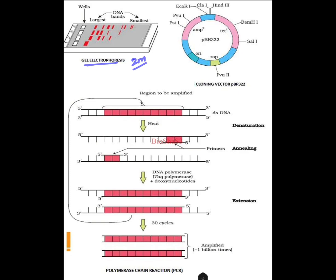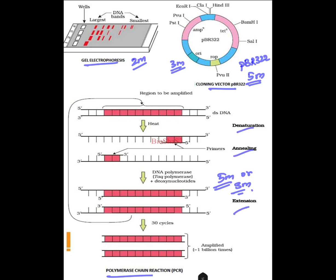The cloning vector pBR322 can be asked for three marks, or 'explain pBR322 or the cloning vehicle' for five marks along with diagram explanation. The Polymerase Chain Reaction (PCR) schematic representation is five marks, or sometimes three marks. You have to mention the three steps: denaturation, annealing, and extension, and show that DNA is amplified nearly one billion times. Mentioning DNA polymerase — specifically Taq DNA polymerase — is important. You should show that heat causes denaturation and splitting of the strand, and then the extension step.